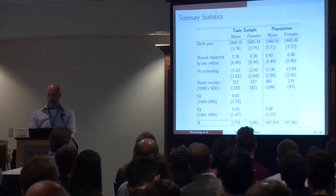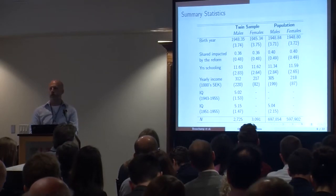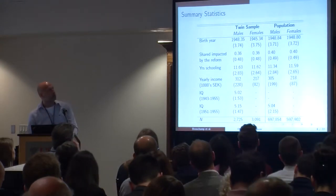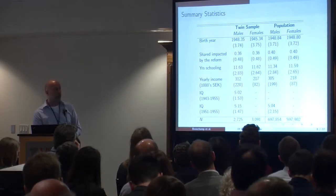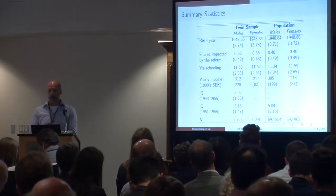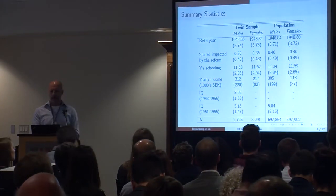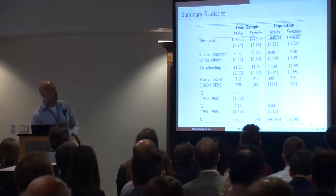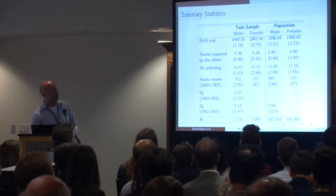On the next slide, we have summary statistics for this twin sample. To check representativeness, I've also included population statistics for cohorts born between 1943 and 1955. We can see that slightly more than a third of the twin sample were affected by the reform — somewhat less than the population average because the twin sample is slightly older, about half a year. Males in the twin sample fare somewhat better than the population average on education, income, and cognitive performance. Females in the twin sample are very similar to the population average for schooling and yearly income.